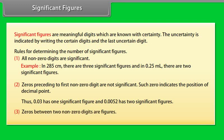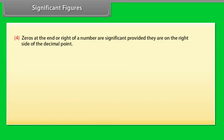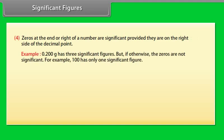Zeros between two non-zero digits are significant. Zeros at the end or right of a number are significant provided they are on the right side of the decimal point. For example, 0.200 gram has three significant figures but if otherwise the zeros are not significant. For example, 100 has only one significant figure.